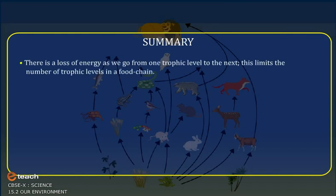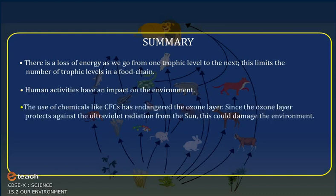Summary. There is a loss of energy as we go from one trophic level to the next. This limits the number of trophic levels in a food chain. Human activities have an impact on the environment. The use of chemicals like chlorofluorocarbons have endangered the ozone layer. Since the ozone layer protects against the ultraviolet radiation from the sun, this could damage the environment.